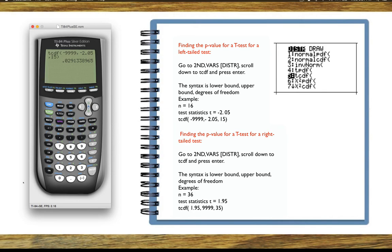We go back to 2nd VARS, scroll down to number 6, press enter. Now since we're looking for an area to the right, the lower bound is the test statistic, which is 1.95, comma, the upper bound is 9999, comma, the degrees of freedom is 35.